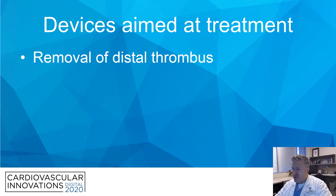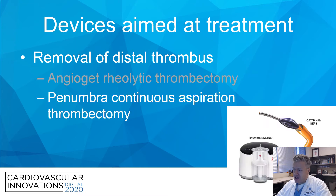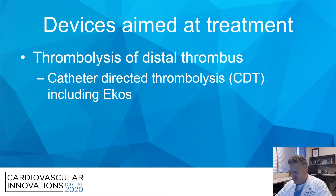Devices aimed at treatment: if thrombus is the situation, you can use devices for removal or breaking up thrombus. AngioJet rheolytic thrombectomy allows for infusion of TPA and then breaking up clot and aspiration. Penumbra allows for continuous mechanical aspiration. There are aspiration catheters — Export, Pronto — or newer devices like the Spire that allow for aspiration of clot. You can also use catheter-directed thrombolysis, including ultrasound-assisted with EKOS, for breaking up clot distally.